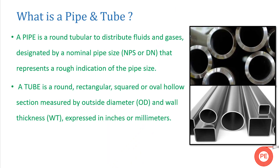Before moving to the main content, let's see what a pipe is and what a tube is. A pipe is a round tubular used to distribute fluids and gases, and it is designated by nominal pipe size or DN. When we need to transport something from one place to another, we use pipes for that purpose — they are used for the transportation of fluids from one place to another.